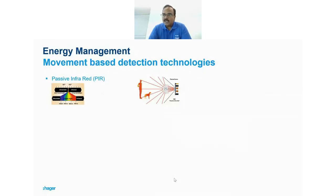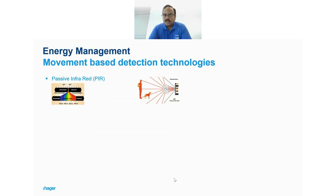PIR technology detects the difference in temperature between the body and the room temperature. The infrared band is not visible to the human eye — it sits to the right of red on the spectrum — but it is detectable by these devices, which sense movement and the presence of a person based on this temperature difference.